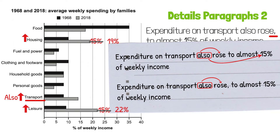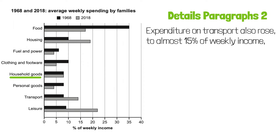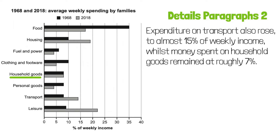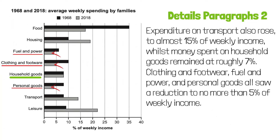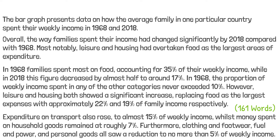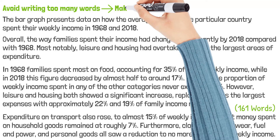Now moving on to household goods: spending on household goods remained at roughly 7%. For the remaining three categories, again, I'm not going to report their figures one by one — I'm going to make a broad comment. The figures are all under 5%: clothing and footwear, fuel and power, and personal goods all saw a reduction to no more than 5% of weekly income. Here's the entire essay — it's 161 words in total. When a chart has a lot of data, the key to avoiding writing too many words is not to report every single piece of data. Instead, we should try to make broader comments on less important data.